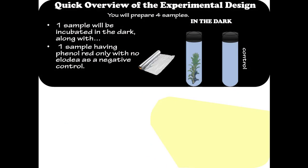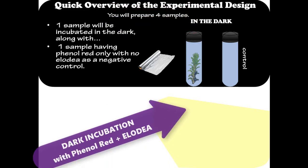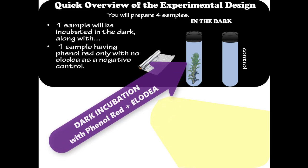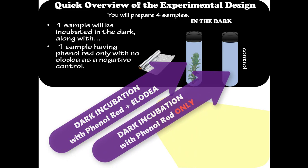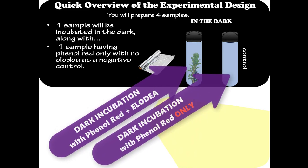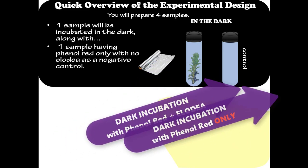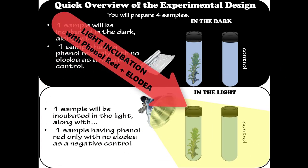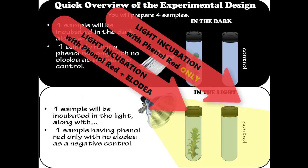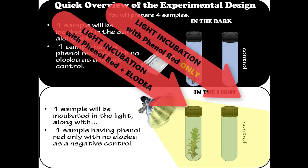You will be preparing four samples. One sample will be incubated in the dark along with one sample having phenol red only with no Elodea as a negative control. One sample will be incubated in the light along with one sample having phenol red only with no Elodea as a negative control.